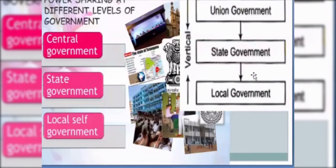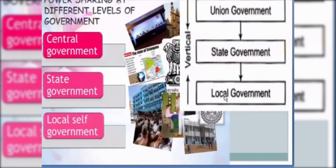Here we can see vertical power sharing. At the top level, the government has the maximum power, and at the grassroots level, the government has less power. This is known as power sharing at different levels of government.